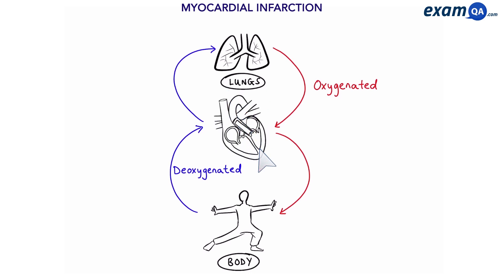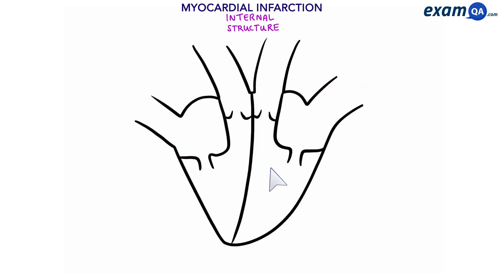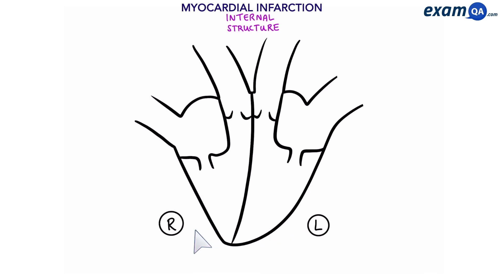The heart has a much more complicated structure than just a box, so let's look inside the internal structure of the heart. Any images of the heart that we see are usually flipped. What that means is the left side is on the right side of the paper and the right side of the heart is on the left side of the paper. The reason it's like this is so that you can imagine it's the heart of your patient.